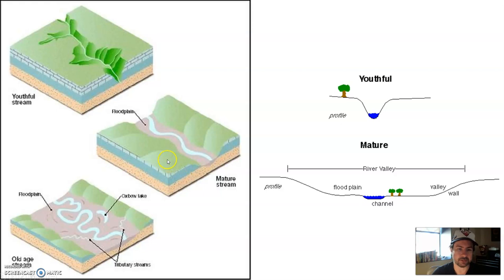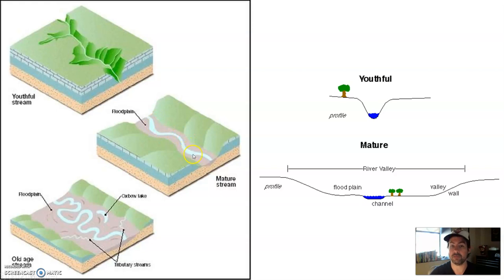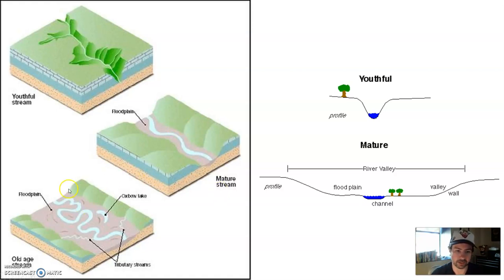Just to go over this again — I felt like I went a little bit fast — a youthful stream has typically straighter stream channels in a canyon or some steep terrain, a V-shaped canyon, and really no floodplain. A mature stream has a little bit of a floodplain and is carving out a valley floor. It's not just V-shaped; there's a little bit of flatness to it on either side.